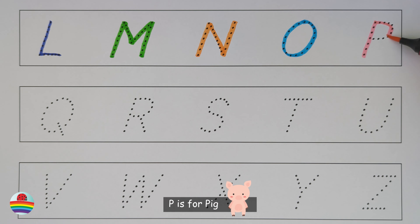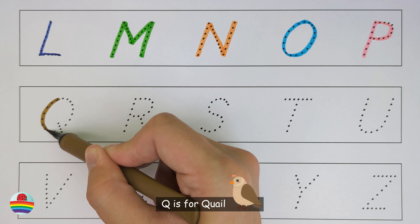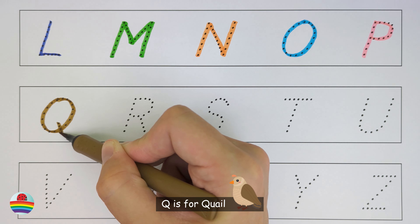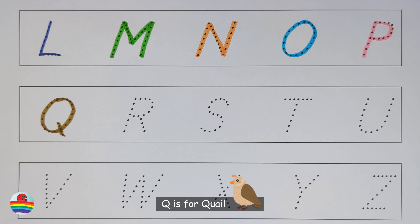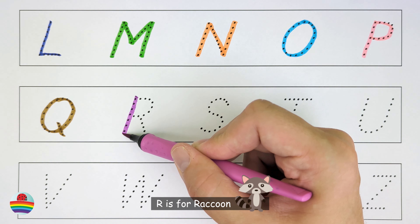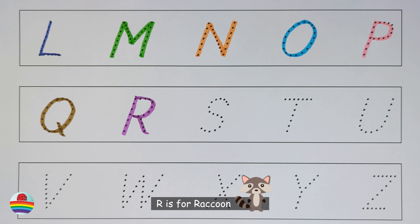P. P is for pig. Q. Q is for quail. R. R is for raccoon.